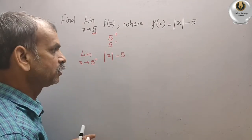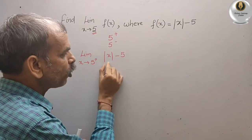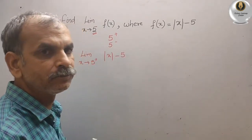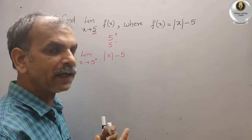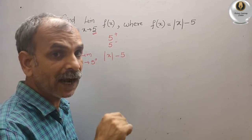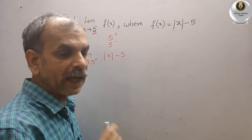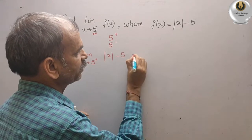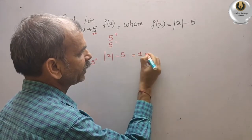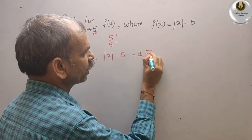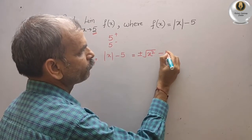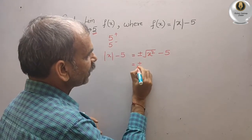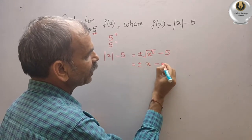Now understand this, what they have given modulus. Modulus means it is a distance formula from the origin, that is x2 minus x1 plus y2 minus y1 under root. That means what we will get here? We will get like this, this is equal to plus and minus under root x square minus 5. If you solve this, we will get plus and minus x minus 5.